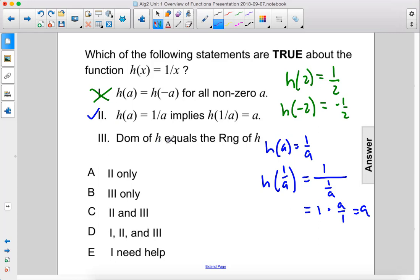Finally, the domain of h equals the range of h. The graph of 1 over x looks a little like that. So the range will be all real numbers except for 0, because these approach 0 but they never actually touch the x-axis.